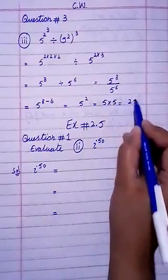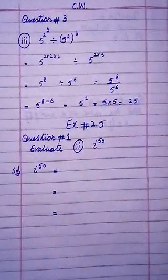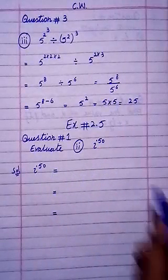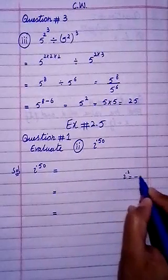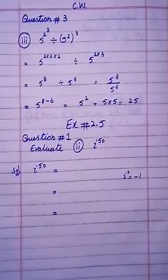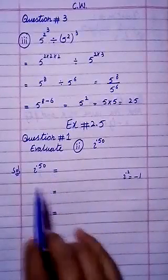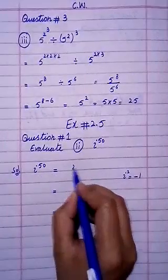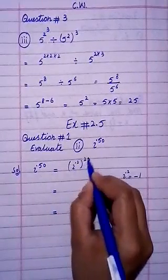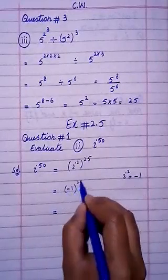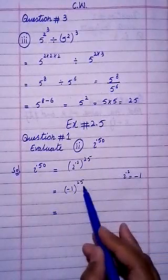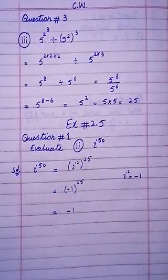Now Exercise 2.5, Question number 1: Iota raised to power 50. You just need the value of iota squared. Iota squared equals minus 1. Convert 50 into iota squared: make factors of 50 with 2 — 2 times 25 equals 50. So write iota squared, whole raised to power 25. Put the value of iota squared as minus 1, whole raised to power 25. Since the power is an odd number, it remains negative. Answer equals minus 1.